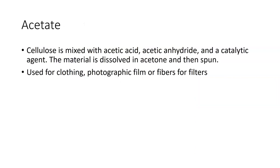We have acetate. Acetate is cellulose mixed with acetic acid, acetic anhydride, and a catalytic agent. The material is dissolved in acetone, then spun out of spinnerets. By doing that you get a material that can be used for clothing. They could make a photographic film or plastic out of it. They used acetate in order to make things like filters.